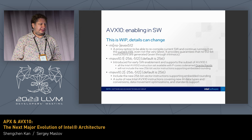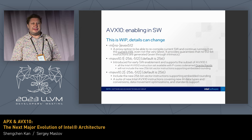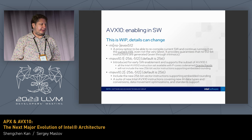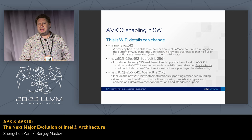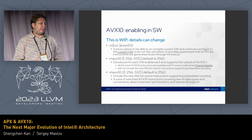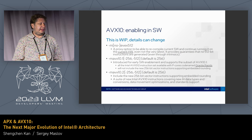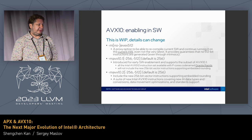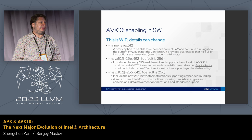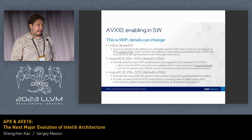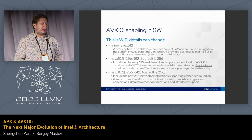A quick introduction to how it affects compilers, since we are at a compiler conference. We are adding new options to target the new hardware. At the request of the GCC and LLVM communities, we are adding a proxy option which basically says: use whatever the current target is, but suppress all 512-bit instructions. This lets you create a proxy binary that runs on today's hardware and will serve as a proxy for your future migration to AVX10. We are also adding an AVX10.1 target with the specification of vector length.